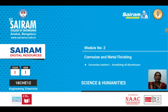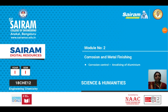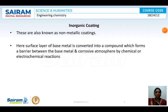We are in Module 2, last topic: anodizing of aluminium under corrosion control. We have discussed metallic coatings and cathodic protection. The last type is inorganic coatings, also called non-metallic coatings.